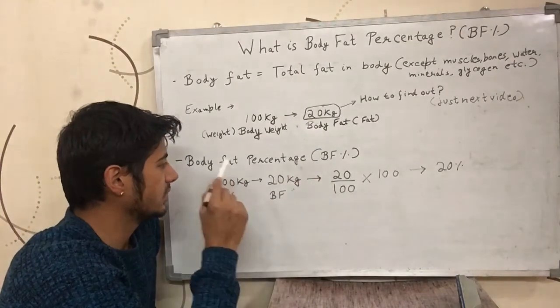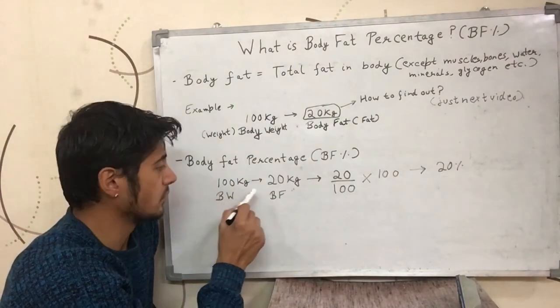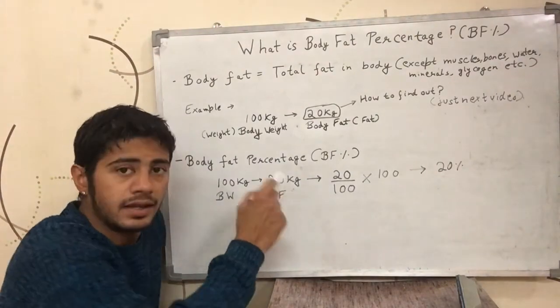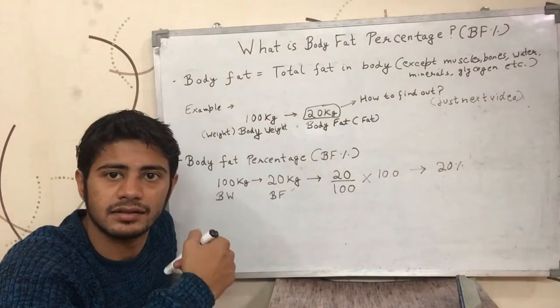Now what is body fat percentage? So the 100kg guy with body weight of 20kg which is called body fat is having one fifth of his body as fat.